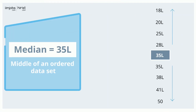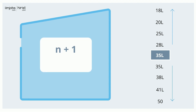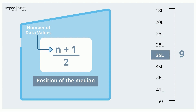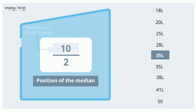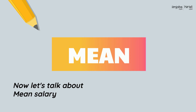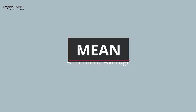So the median is 35 lakhs. When a data set is large, it is helpful to use the formula (n + 1) / 2, which gives the position of the median, where n is the total number of salaries. Here we have nine salaries, so the median is the salary in the fifth position, which is 35 lakhs.